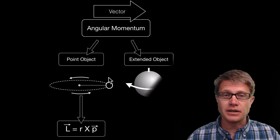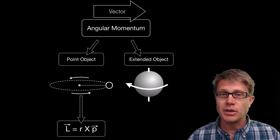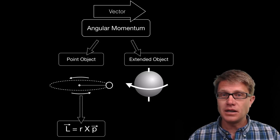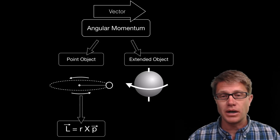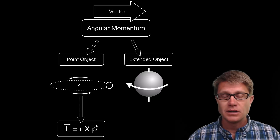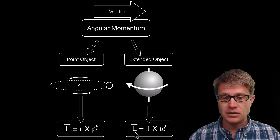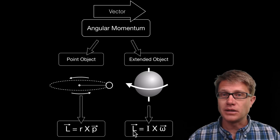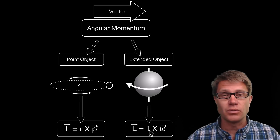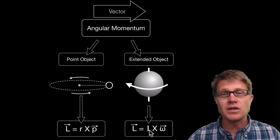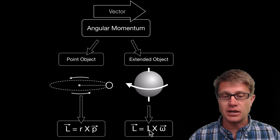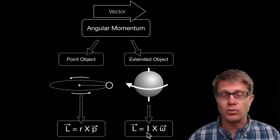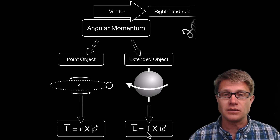You also should be able to calculate the angular momentum of an extended object — where the whole object is rotating around a point. Angular momentum is equal to I, the rotational inertia, times the angular velocity of the object. That inertia will change depending on what the object is.